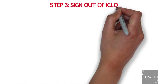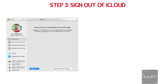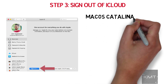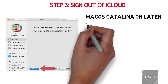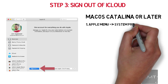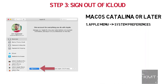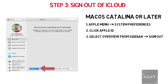Step number three: sign out of iCloud. If you're currently running the latest macOS Catalina or later, you will navigate to Apple menu, System Preferences, then click Apple ID. Select Overview in the sidebar, then click Sign Out.